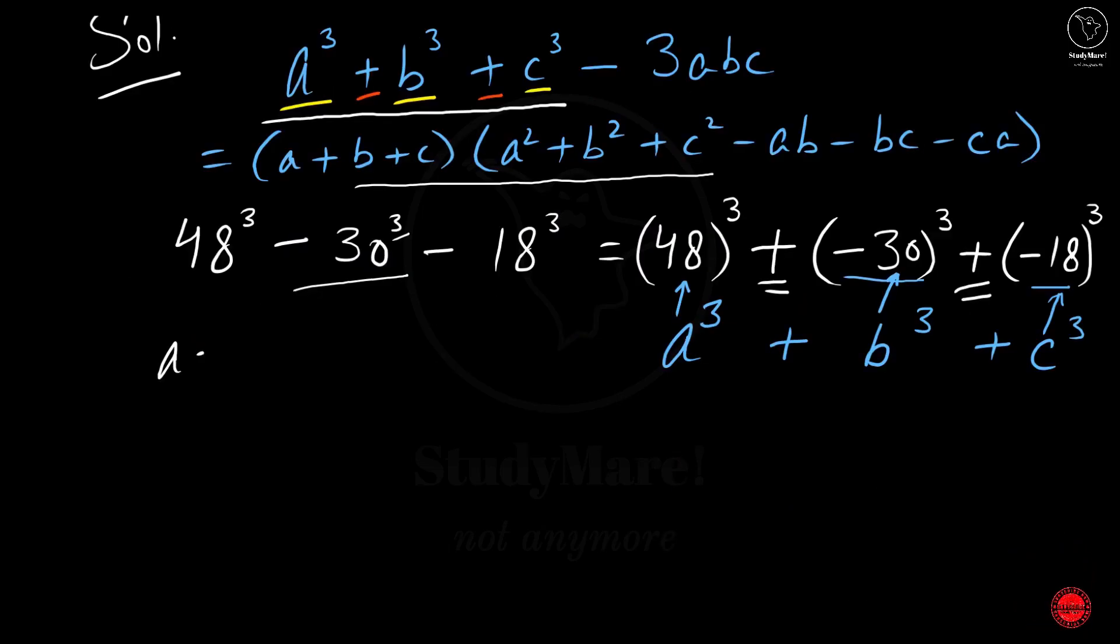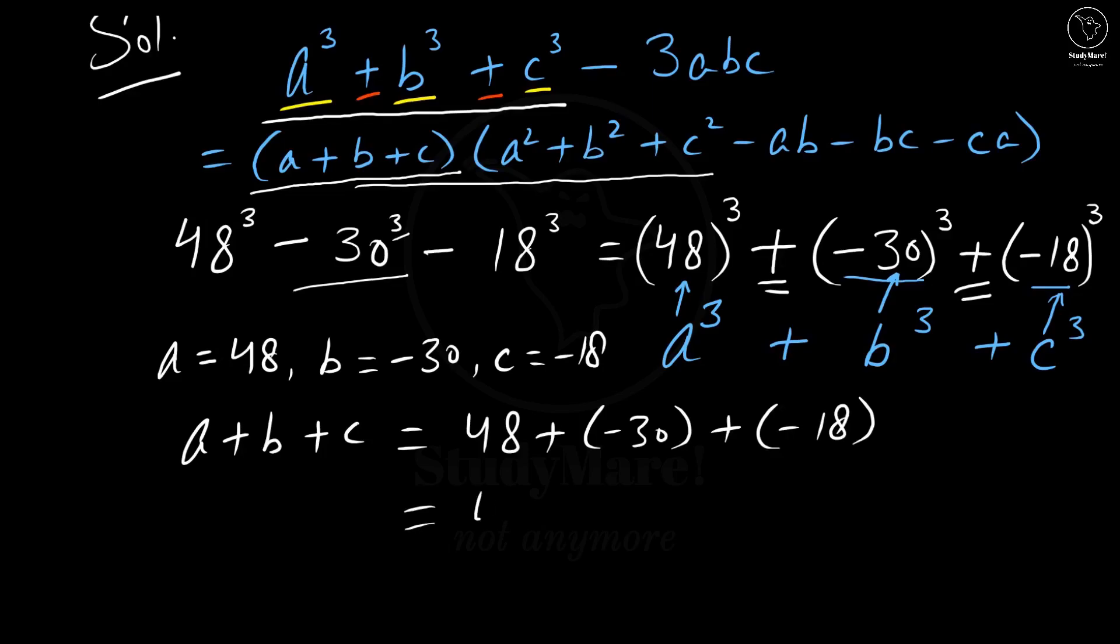It means a is equal to 48 here, b is equal to minus 30 here, and c is equal to minus 18 here. If you have not seen some of my previous videos where we have used this kind of concept, you can just understand it right here. Let's calculate a + b + c, which is equal to 48 + (-30) + (-18), which is equal to 48 - 30 - 18. That gives us 48 over here, this minus 30 and this minus 18 add up. So we get 30, 18, 48, and this 48 cancels out 48. Thus we get it as 0.